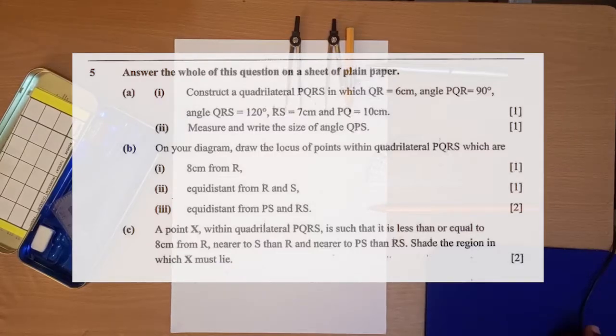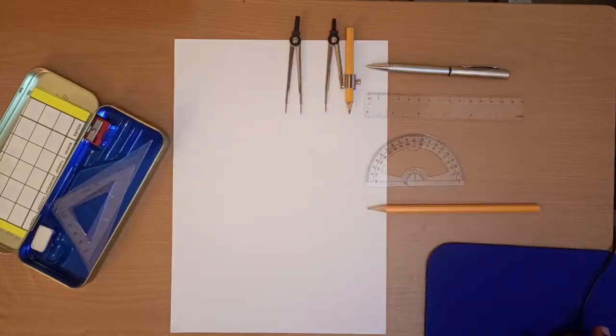The question reads: answer the whole of this question on a sheet of plain paper. 5A1: Construct a quadrilateral PQRS in which QR equals 6 centimeters, angle PQR equals 90 degrees, angle QRS equals 120 degrees, line RS equals 7 centimeters, and line PQ equals 10 centimeters. 5A2: Measure and write the size of angle QPS.